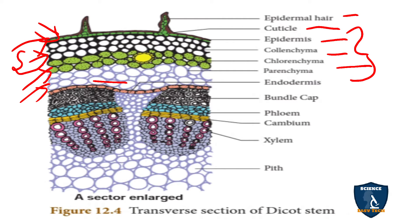The innermost layer of the cortex is the endodermis, which is filled with starch grains. Because of this it is called the starch sheath.